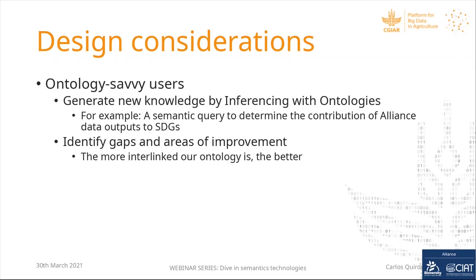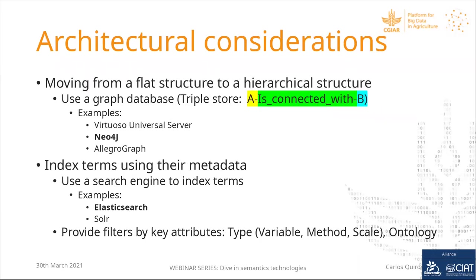It is also important that ontology savvy users can identify gaps and areas for improvement. If we want to do inferences across ontologies, the more our terms are interconnected and linked to other ontologies, the more inferencing we can actually do. They would also like to see how their ontology looks — these design considerations drive the architectural decisions.